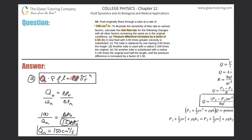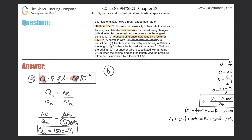For each of these other ones, you can do the same analysis. In letter B, there's a new fluid with three times the greater viscosity. So now what you would do is highlight the flow rate and the viscosity.